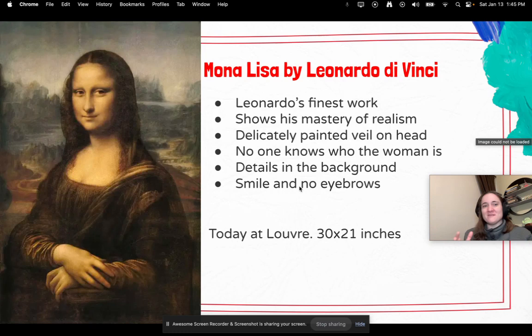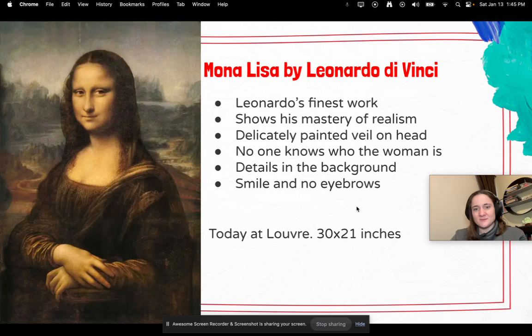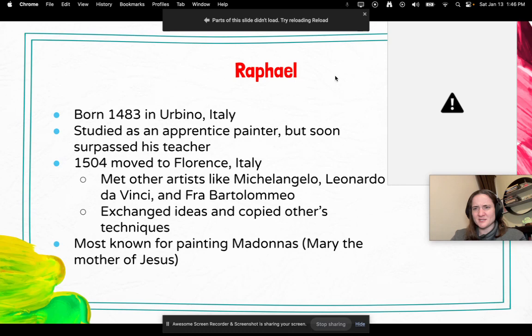She has that very slight smile but no eyebrows. The really crazy thing is it's not that big of a painting — it's only about 21 inches by 30 inches, so it's tiny. And you can see it today at the Louvre.